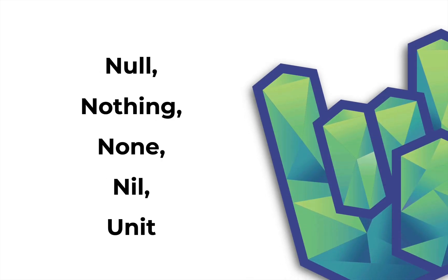Hello, this is Daniel for Rock the JVM. In this video we are going to make the distinction between null, nothing, none, nil, and unit in Scala as representations of the absence of meaningful values. These terms represent different things, and by the end of this video you will know which to use when.